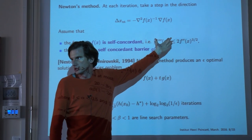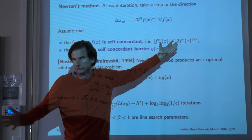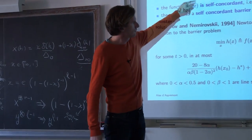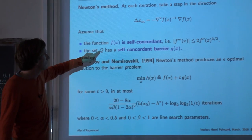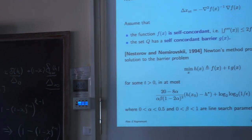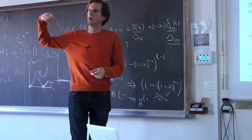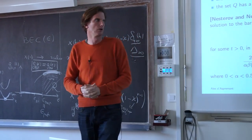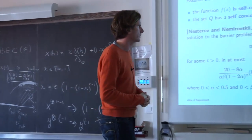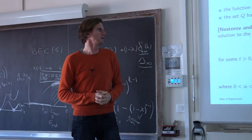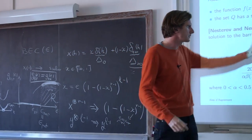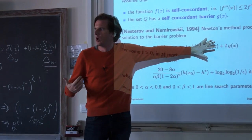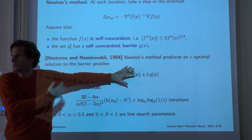Everything that preserves convexity more or less preserves self-concordance. Self-concordance is affine invariant. No one even thinks about this condition anymore — it holds for all the problems you care about. You make two additional regularity assumptions: your objective is self-concordant, and the set Q has a self-concordant barrier, so you can maintain your iterates inside Q using a penalty in the objective. This penalty also satisfies the regularity assumption.